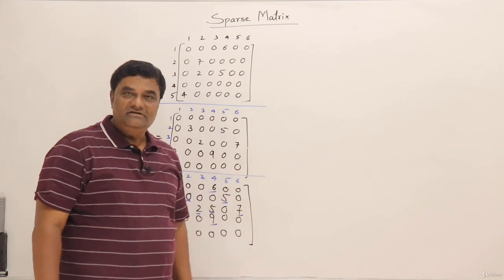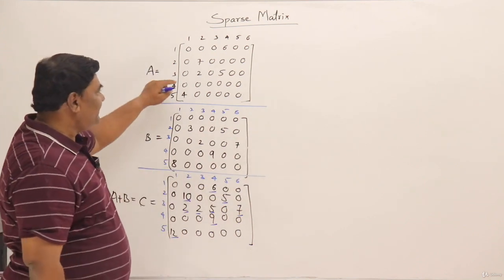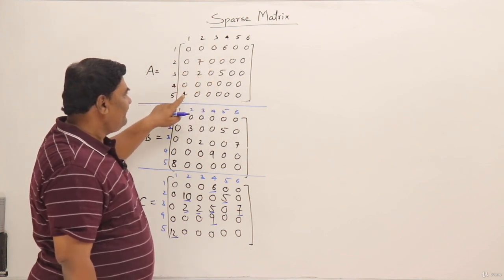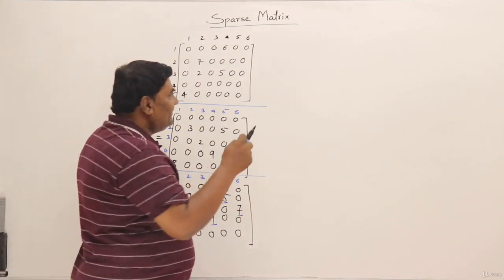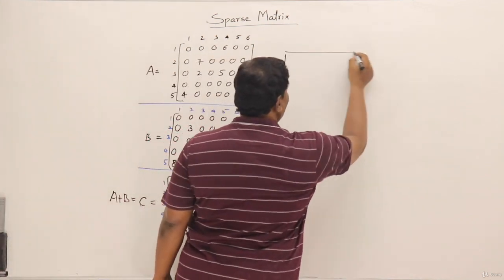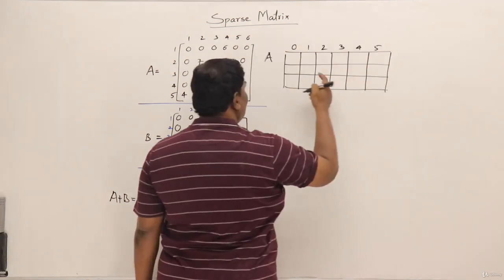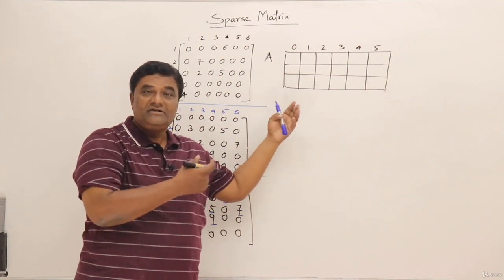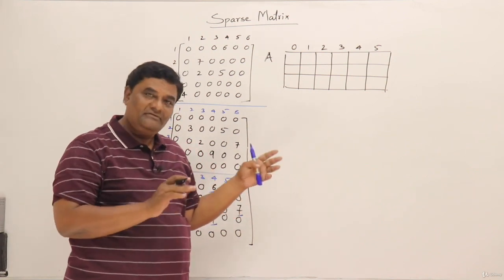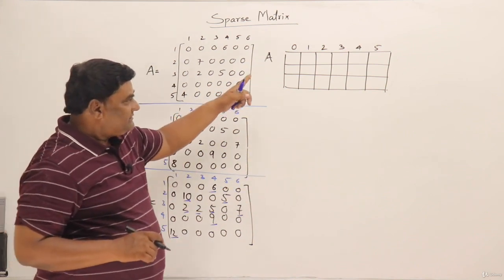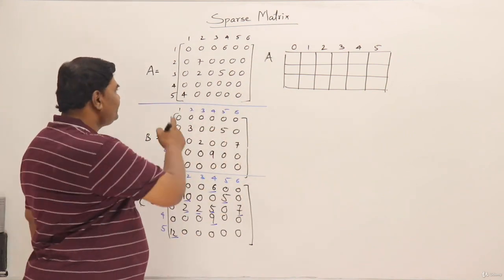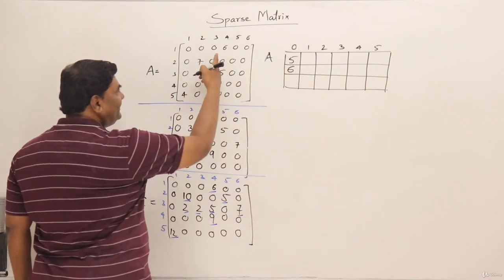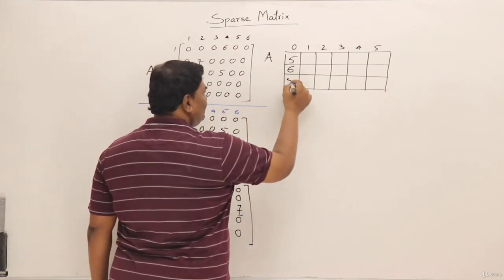Let us represent matrix A as a coordinate list. Counting the nonzero elements: 1, 2, 3, 4, 5 — so 5 nonzero elements. I will take a horizontal table of size 6, called array A — it may be a two-dimensional array or array of terms. At the zeroth index I write down the dimensions: 5 rows, 6 columns, and the number of elements — 5 nonzero elements.